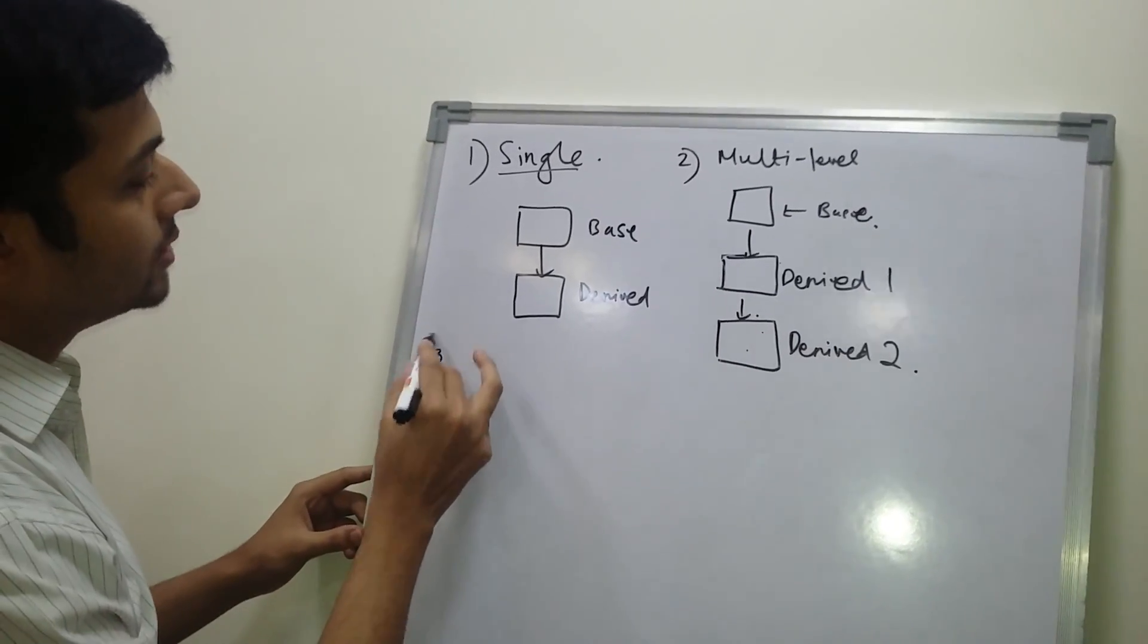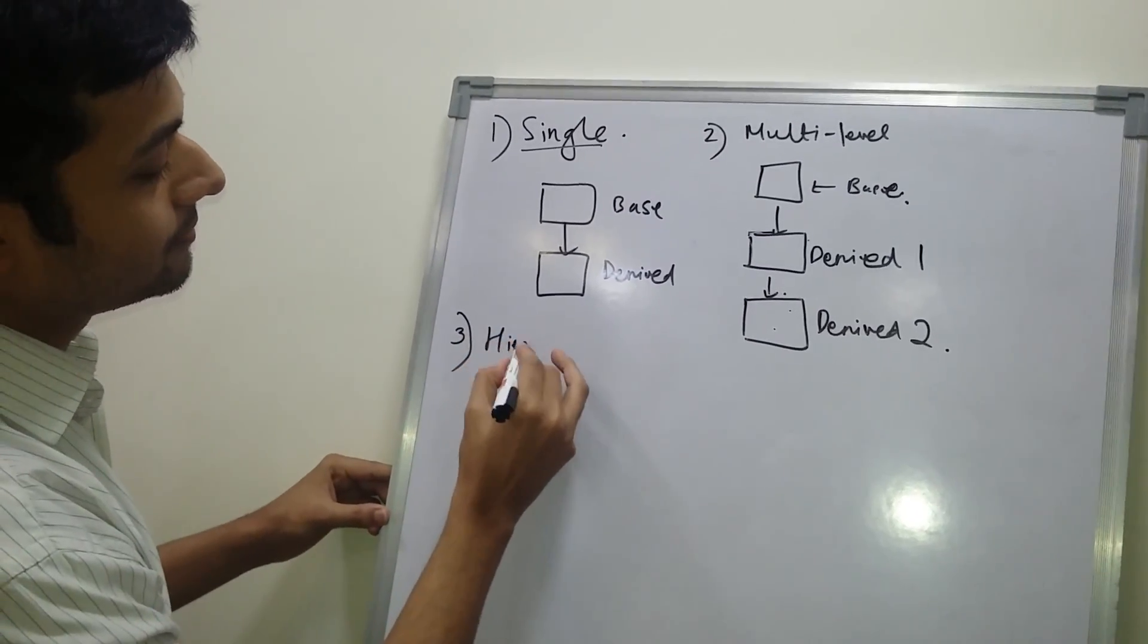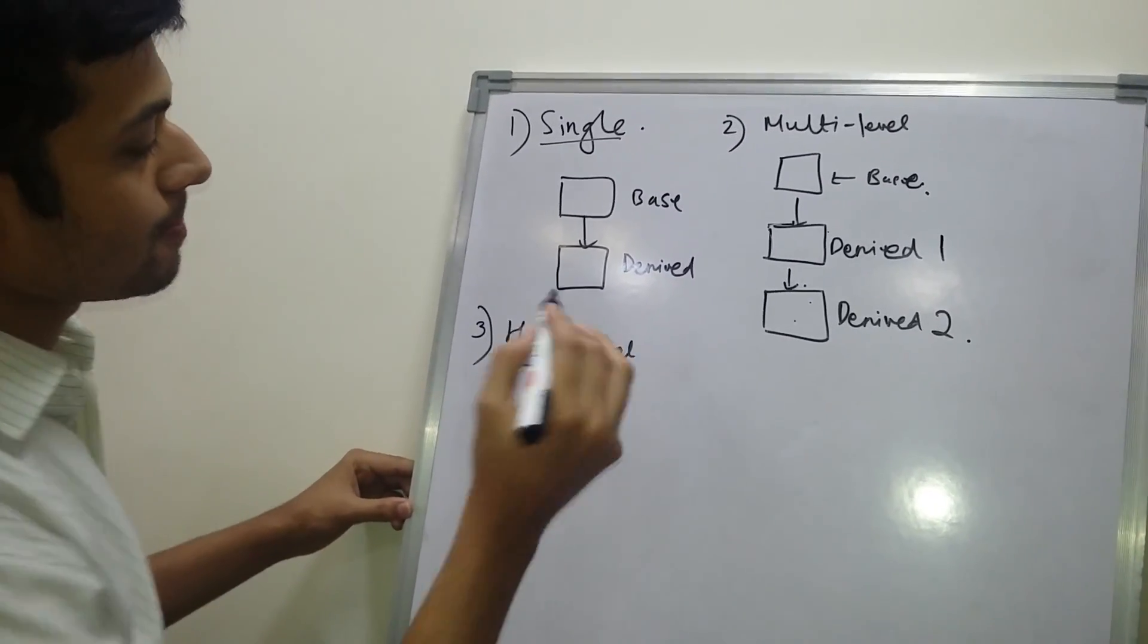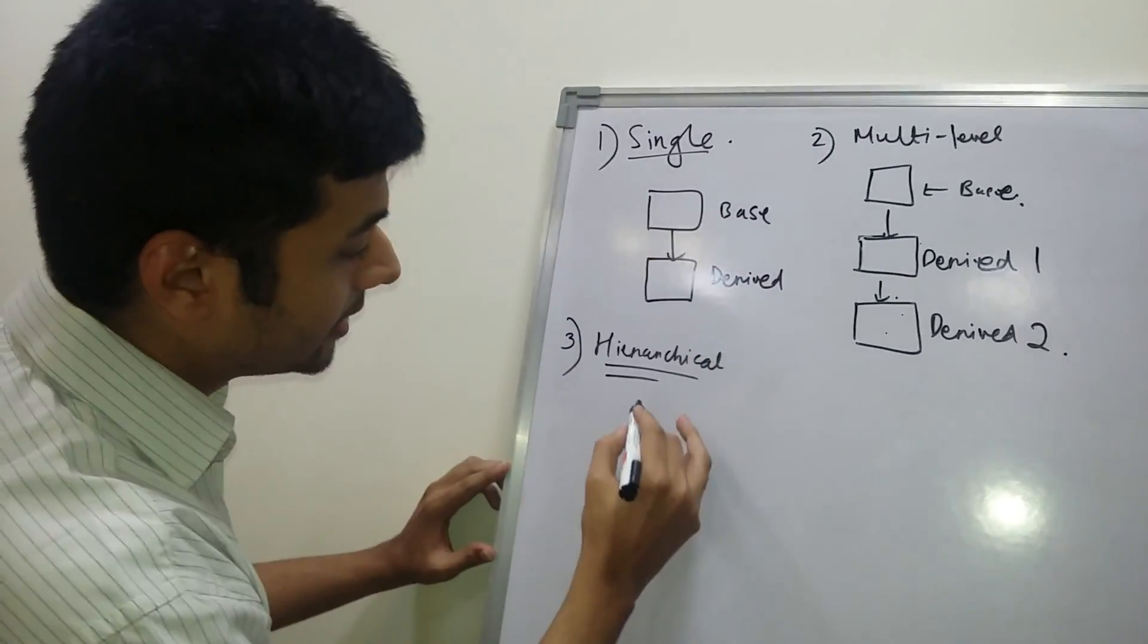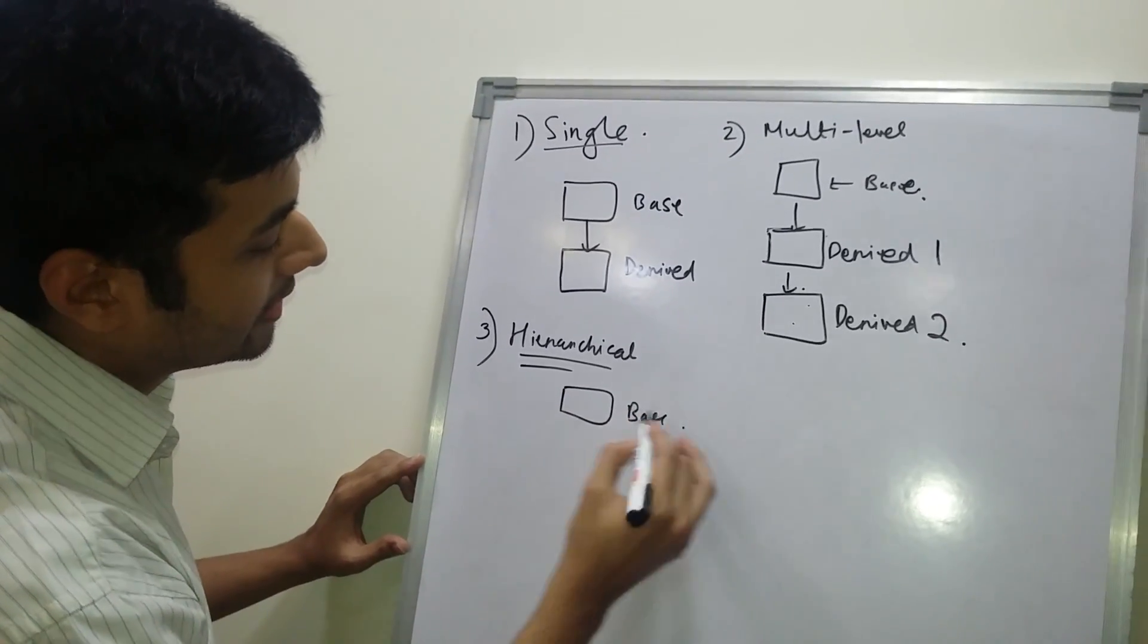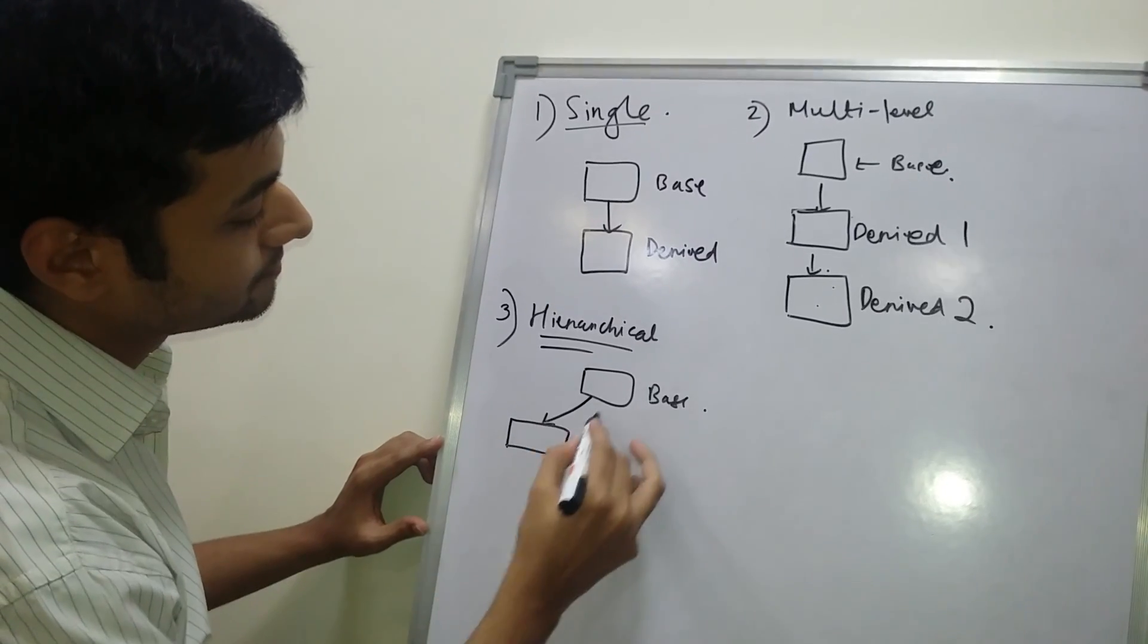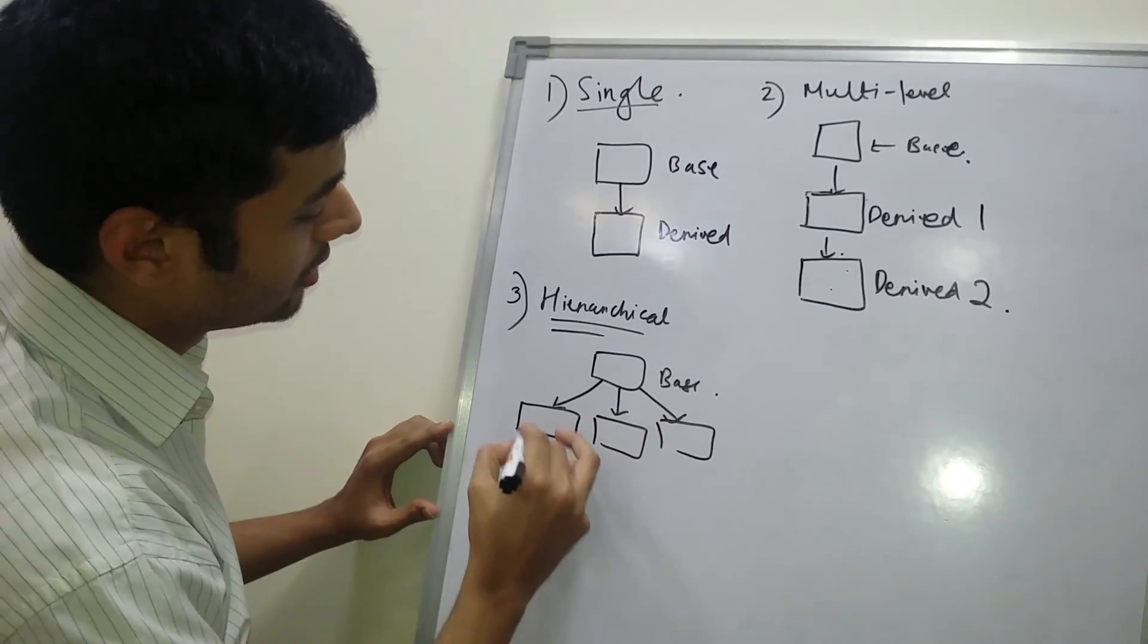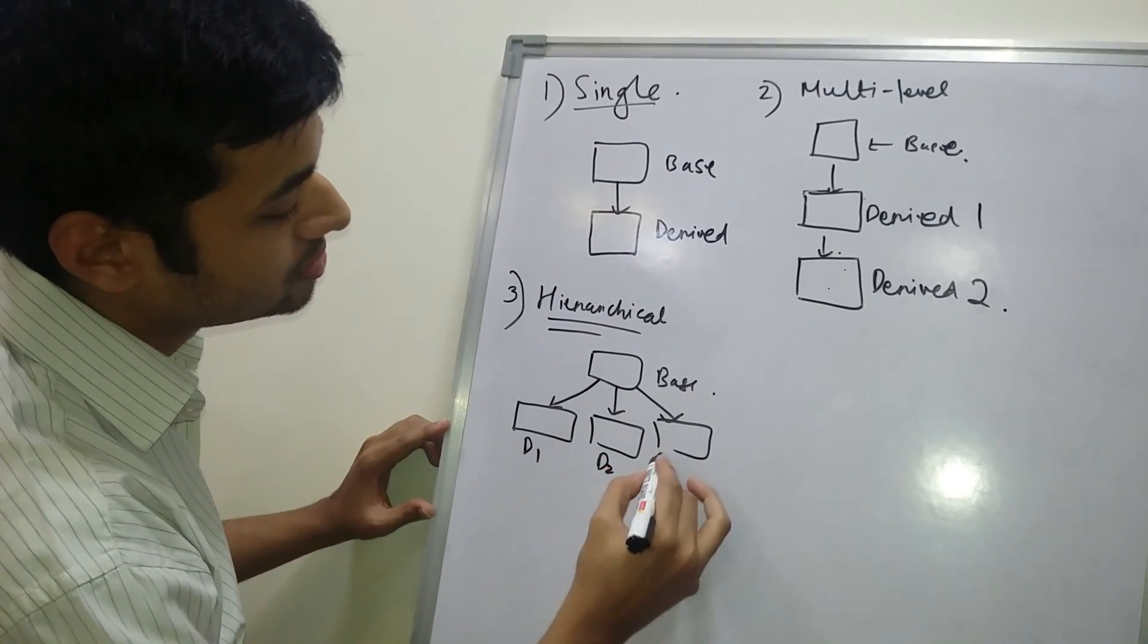Third one is hierarchical. In hierarchical, there is one base class and there are multiple derived classes: D1, D2, D3.